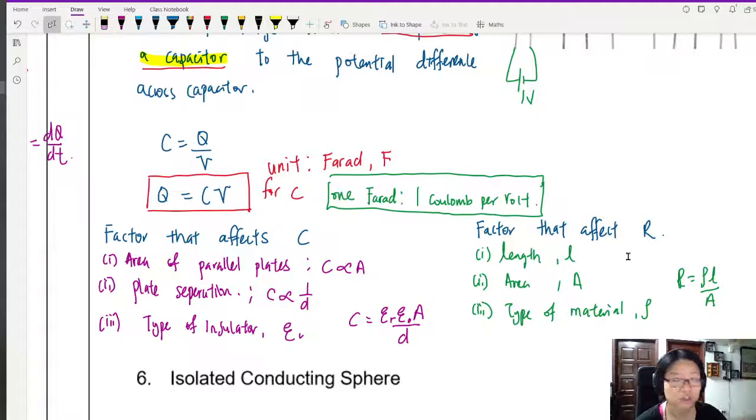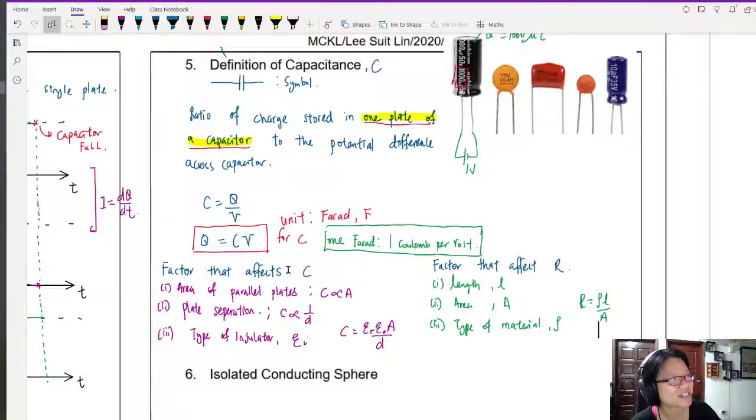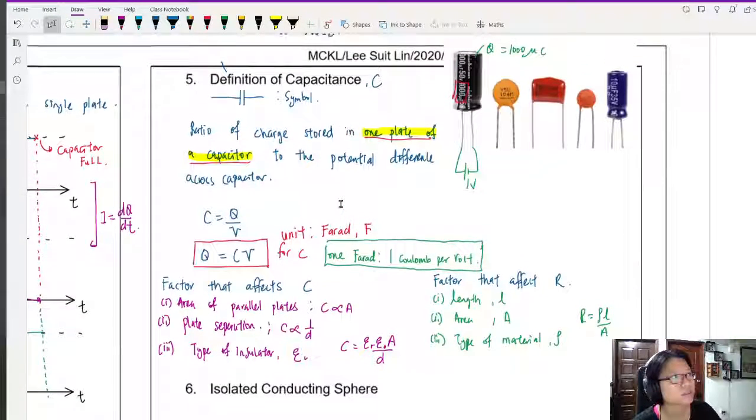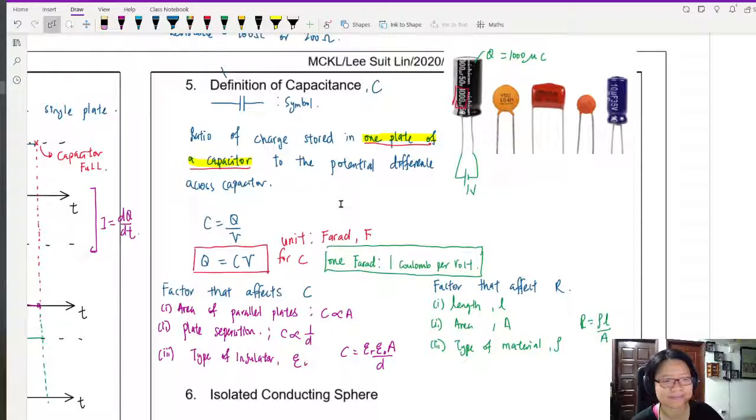Resistor is to slow down charge flow. Capacitor is to temporarily deposit or separate the charge. You can see it as storing charge, but do not write it out. Because that's not what's happening. So this is the definition of a capacitance. Once again, it is the ratio of charge stored on one plate to the potential difference across the capacitor. So that's all for this one. Let's go ahead.